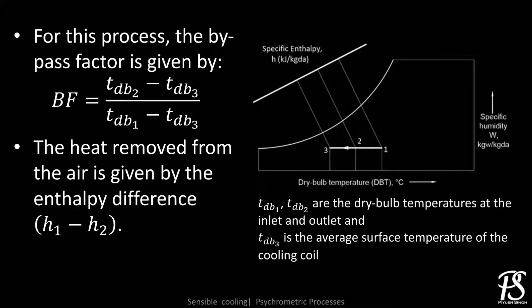This can be explained with the help of bypass factor. It gives us a measure of the extent to which air reaches the mean effective surface temperature of the coil. Mathematically, it can be calculated by an expression which is the same as the ratio between the temperature drop that could not be achieved to the maximum possible temperature drop.